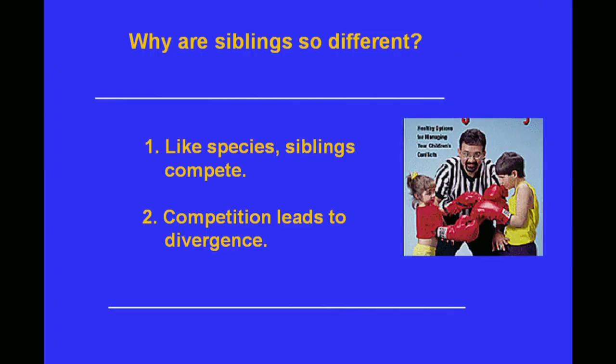Why are siblings so different? They're really just like Darwin's finches. They're like species — siblings compete, and competition, as with Darwin's finches, leads to divergence.